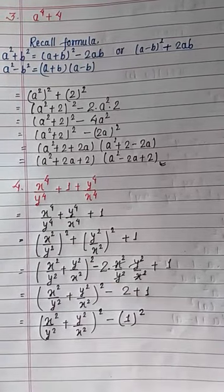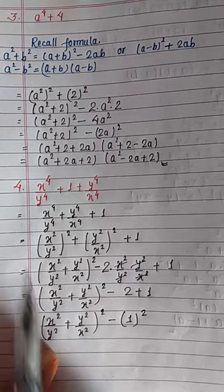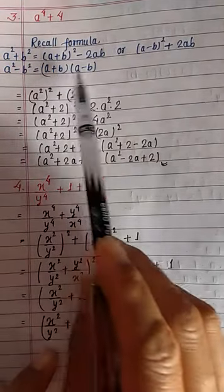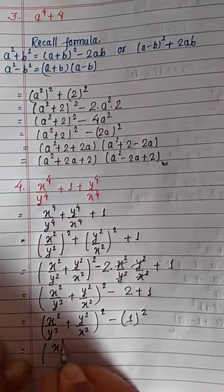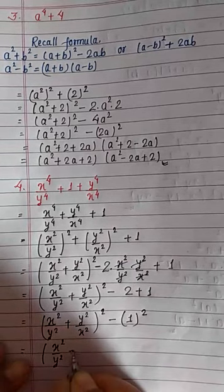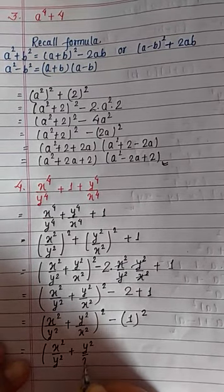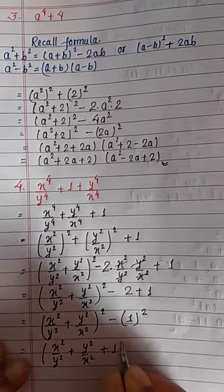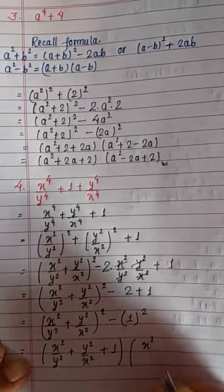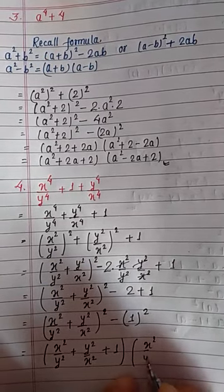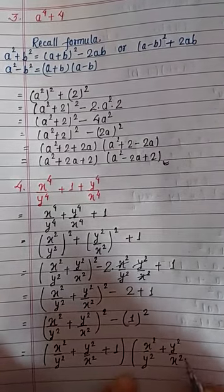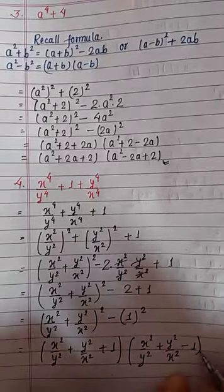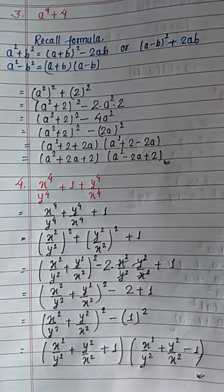So we can write this as a difference of squares. Applying a square minus b square equals a plus b times a minus b, where a is x square over y square plus y square over x square, and b is 1. This gives: x square over y square plus y square over x square plus 1, times x square over y square plus y square over x square minus 1. This concludes our question. Thank you for watching — see you in the next video.